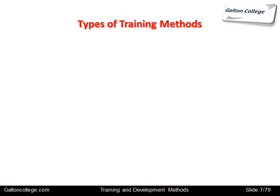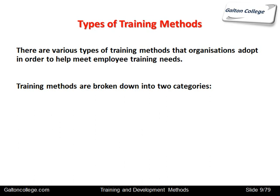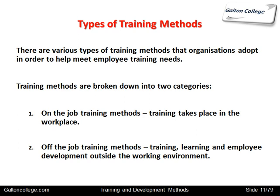Now the types of training method. There are various types of training method that organisations can adopt. They can be broken down into two categories: on-the-job training, which takes place in the work environment, and off-the-job training, which involves employees attending training centres or local colleges elsewhere away from the workplace. We're going to look at these in more detail in the coming slides.